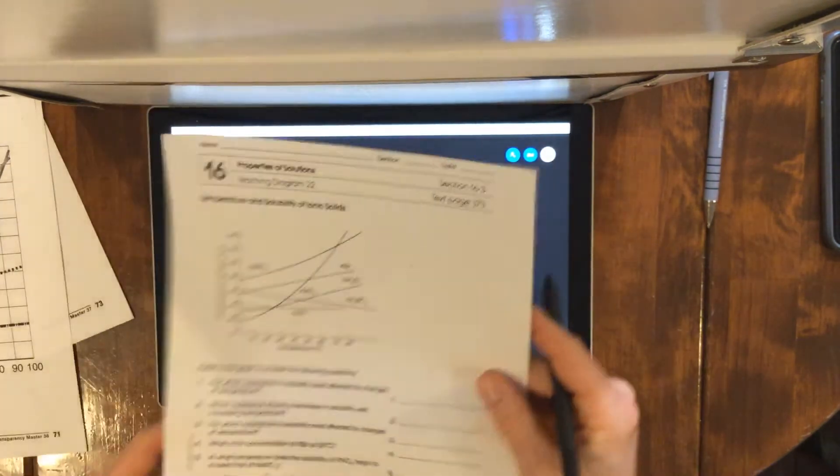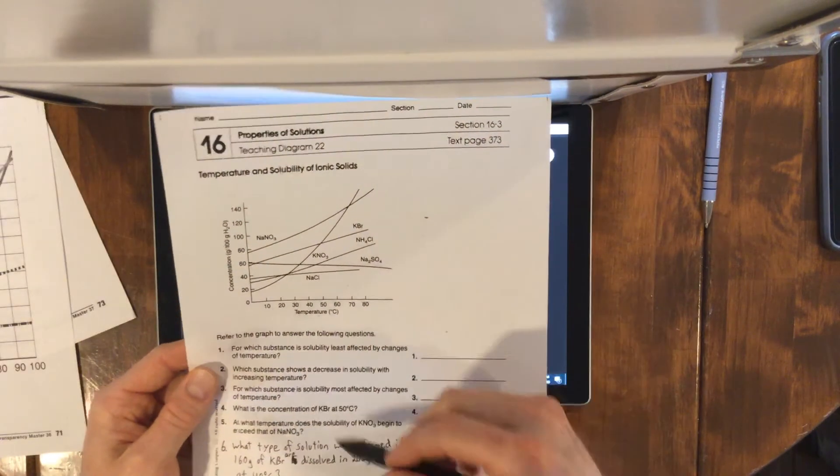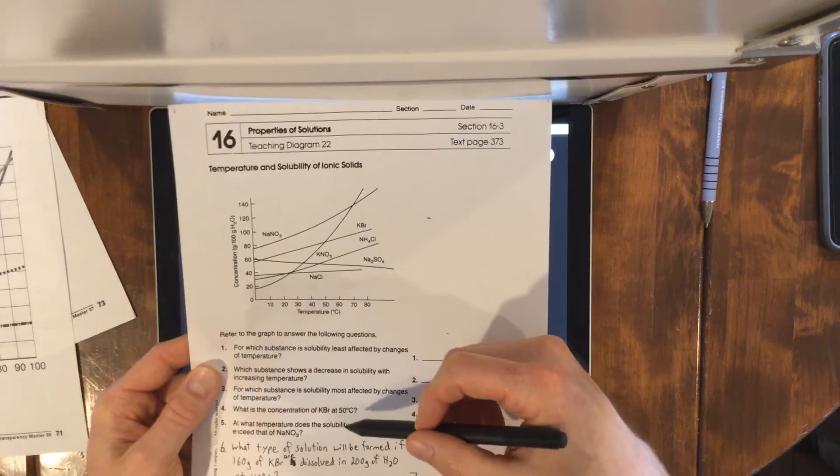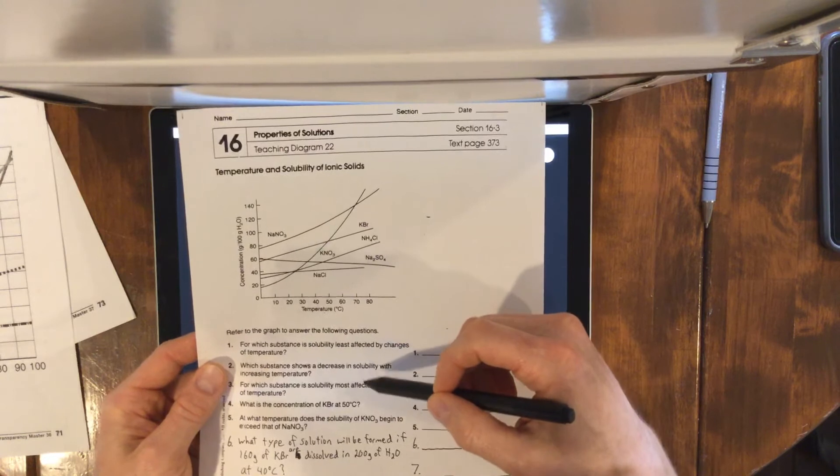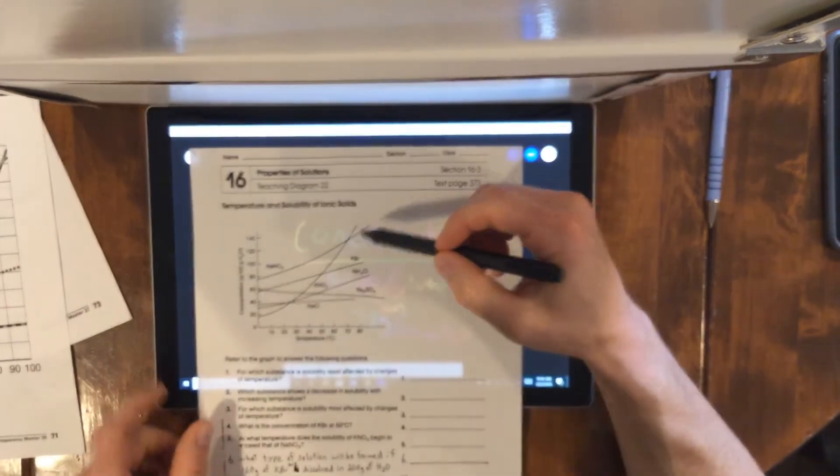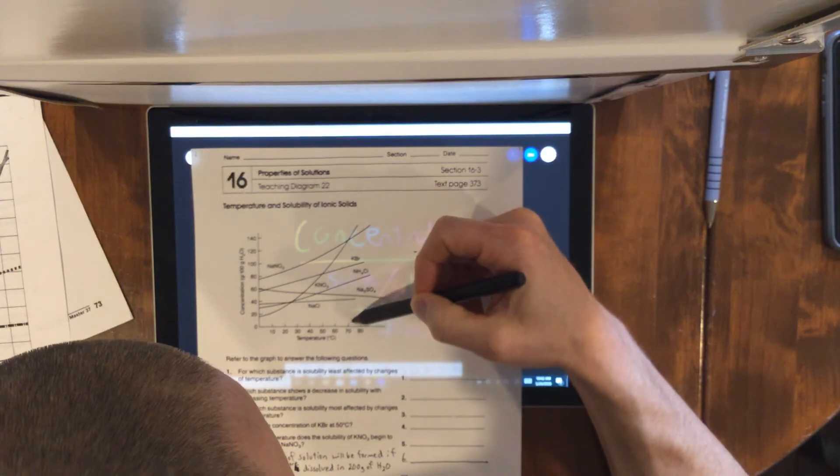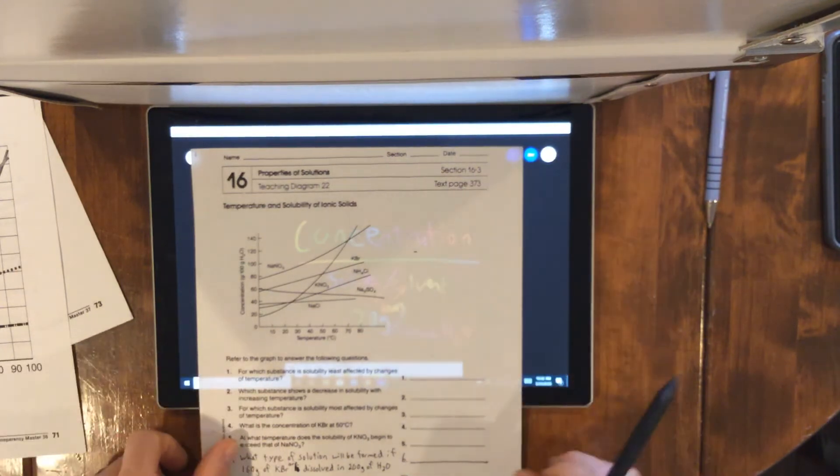What temperature does the solubility of KNO3 begin to exceed that of NaNO3? Begins to exceed NaNO3 around, I don't know, 72 degrees Celsius is where it starts to pass it.